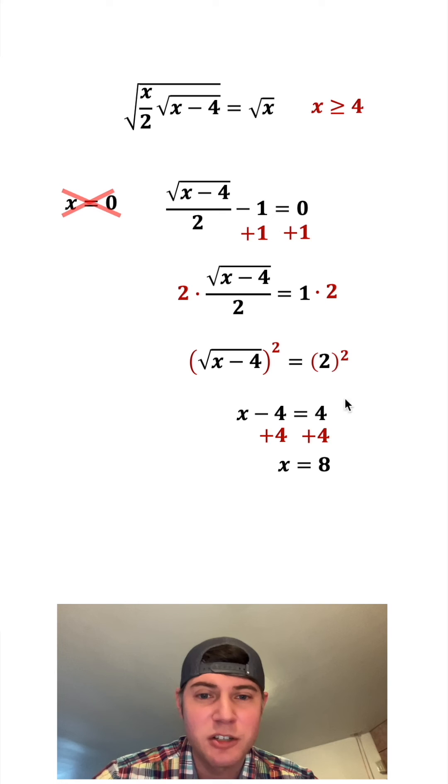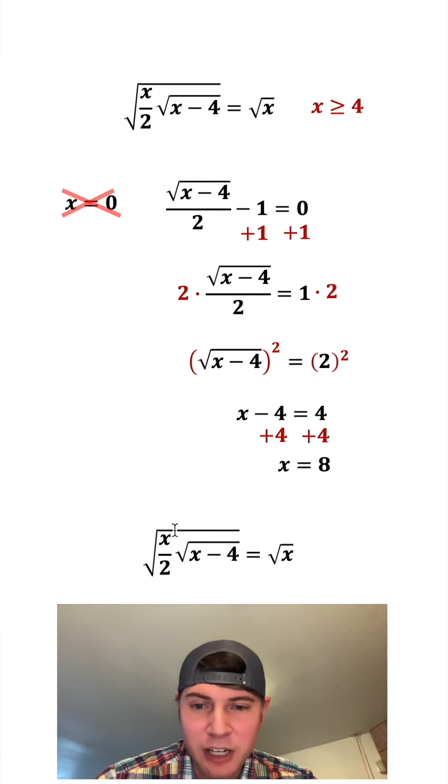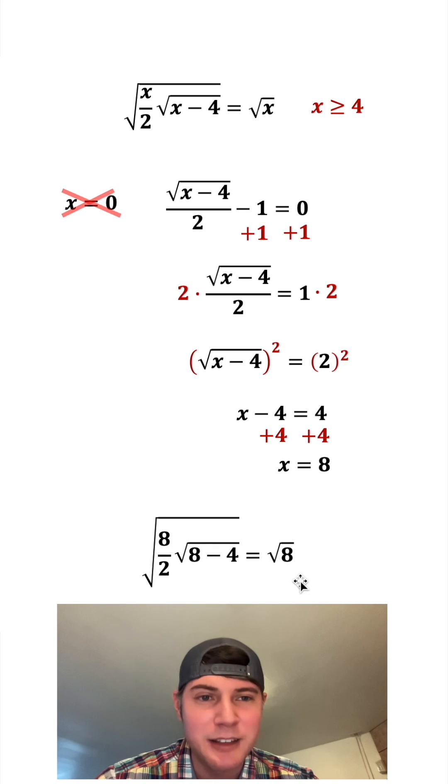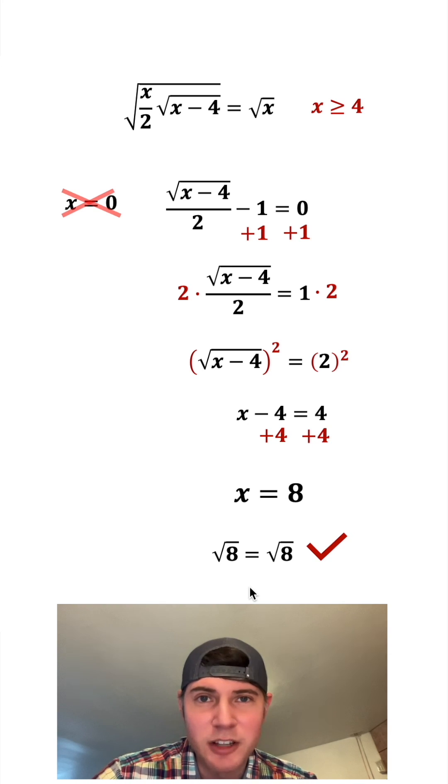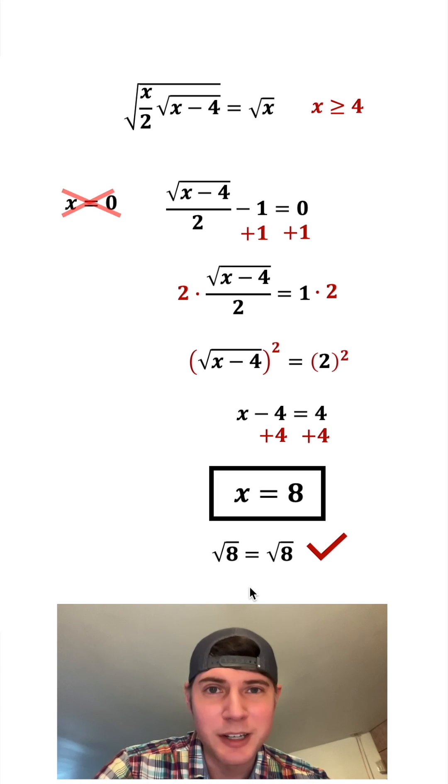And eight is within our domain restriction, so it is possible it'll work. Let's plug it in to make sure. Let's copy this down here. And then for each of these x's, let's plug in an eight. This eight divided by two changes into four. Eight minus four changes into four. Square root of four is two, and four times two is eight. So it checks out. x equals eight is a valid answer to this, and let's put a box around it. How exciting.